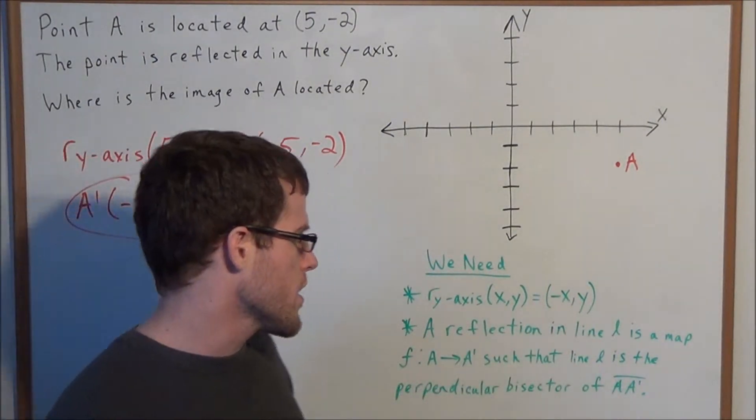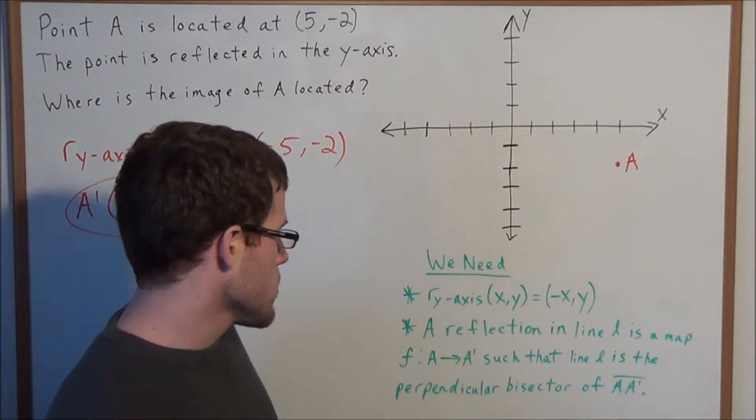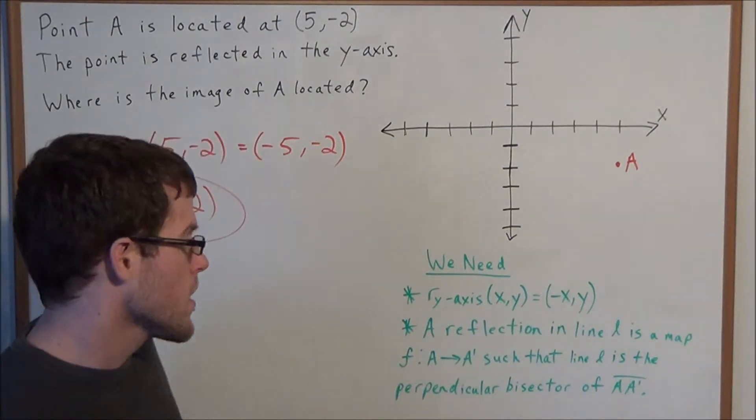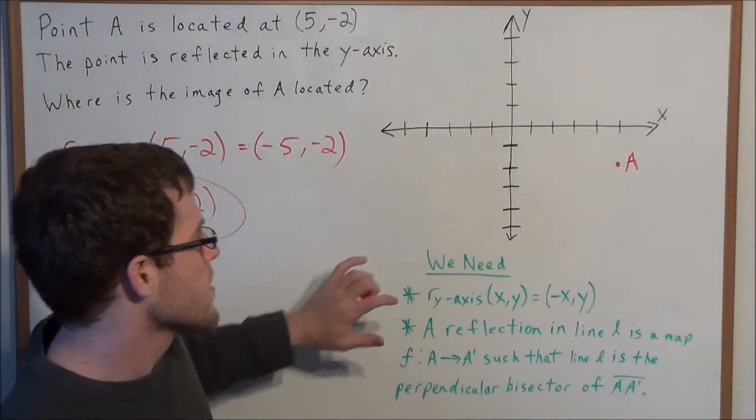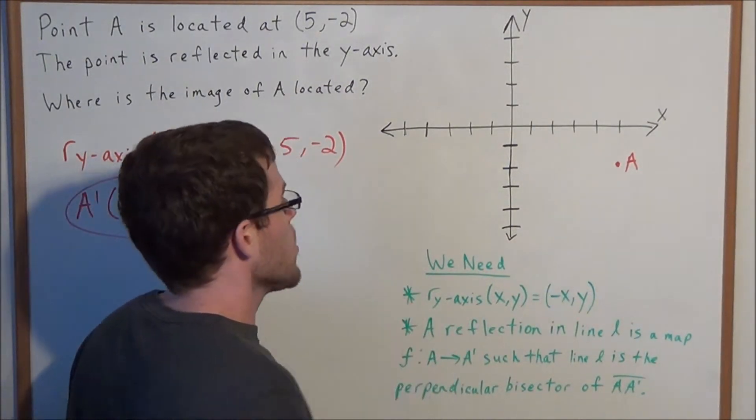A reflection in line L is a map from A to A prime, such that line L is the perpendicular bisector of line segment AA prime. So how is this going to help us if we forgot this equation for a reflection in the y-axis?